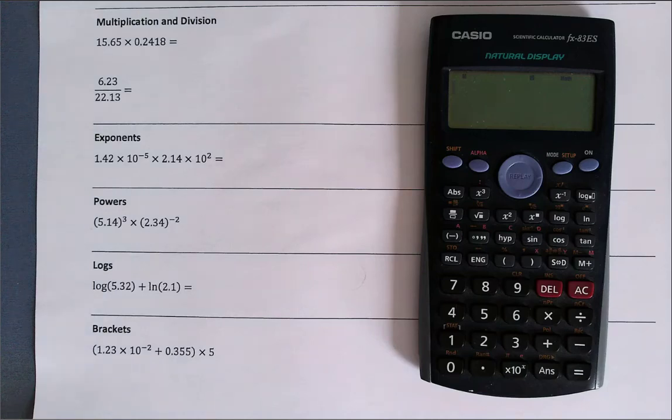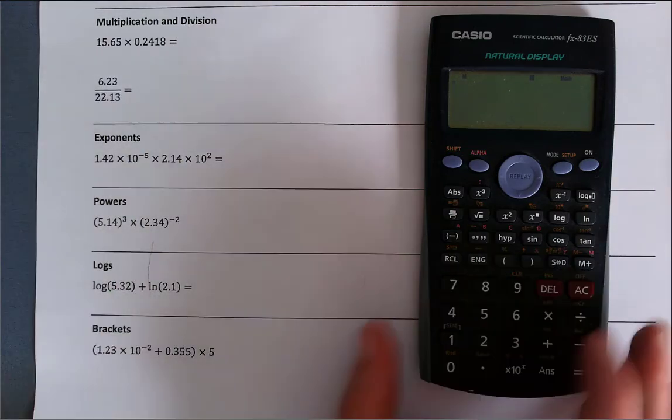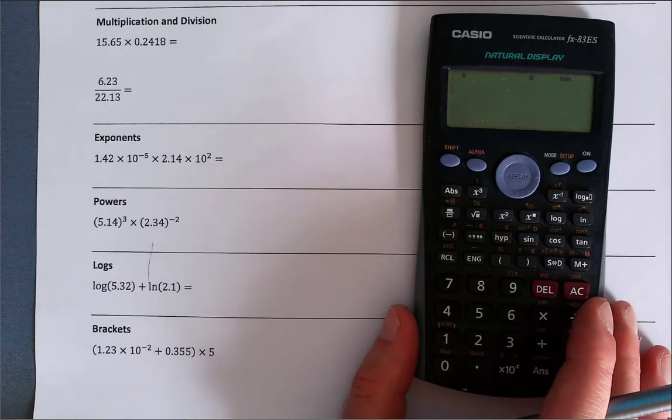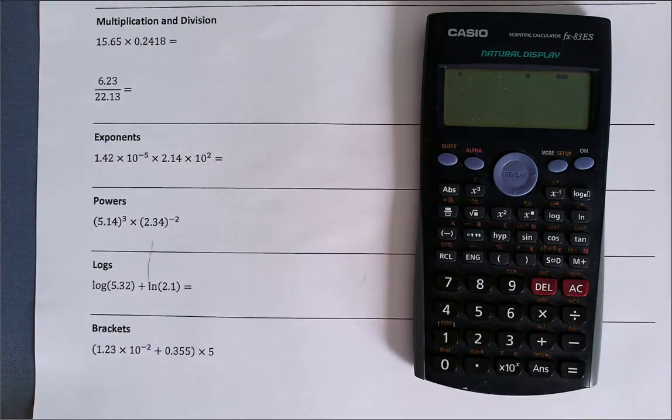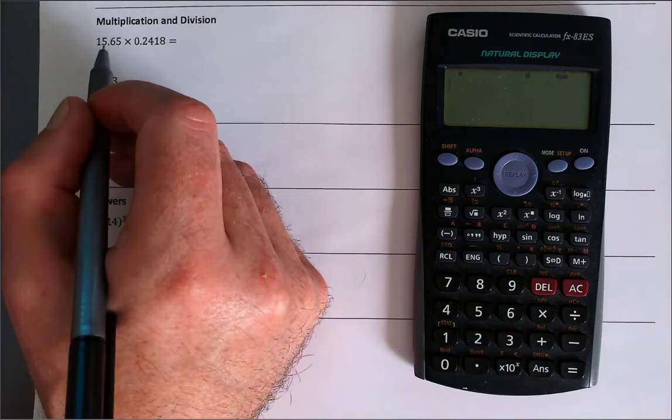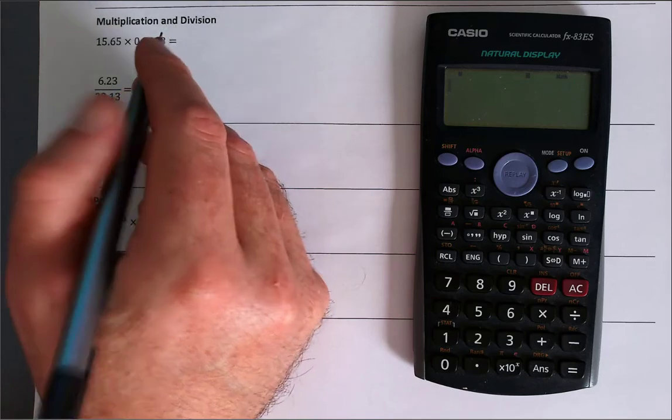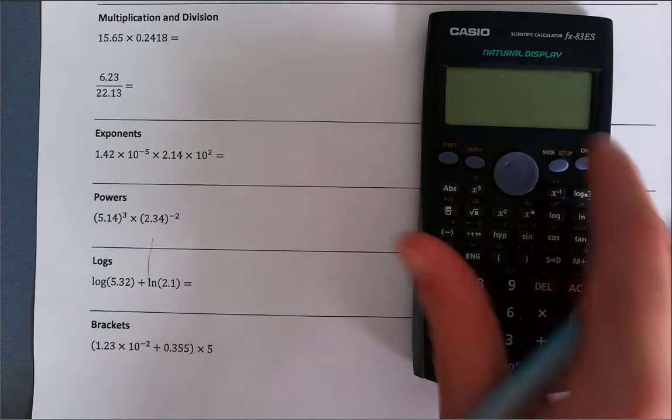Hi there, in this short video we're going to look at performing various simple mathematical calculations using a scientific calculator. So let's start off. This calculator is a Casio, but I'll try and refer to what other calculators might look like as well. Very simple operations such as multiplication and division.